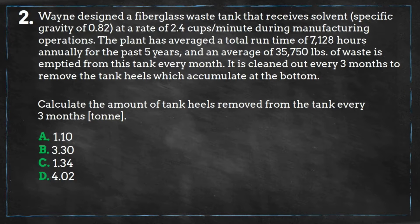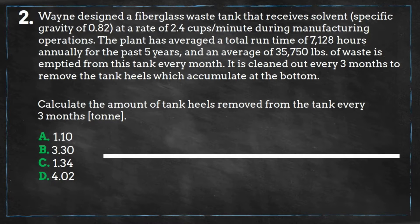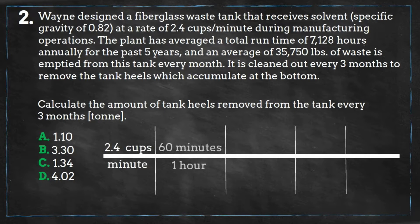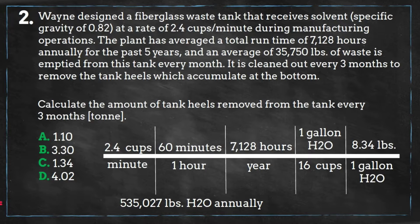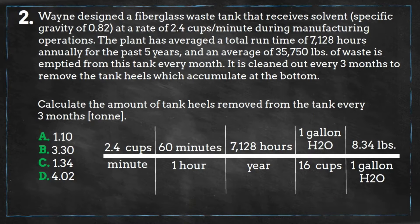Our first step will be normalizing our units. Right now, our waste generation rate is in cups per minute, but using some unit conversions, we can convert this into pounds per year, which are very similar units to our waste disposal rate. We get an answer of 535,027 pounds. But remember that most unit conversions are based on the density of water and not your waste, so remember to multiply by the specific gravity to get your correct answer, which is 438,722 pounds of waste annually.